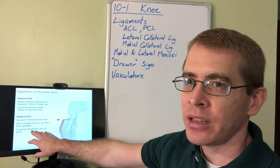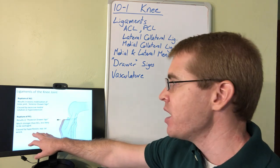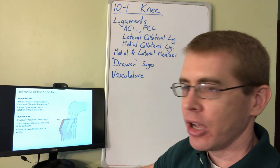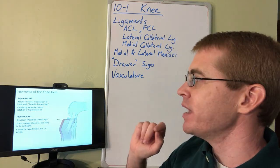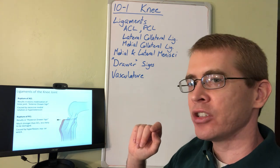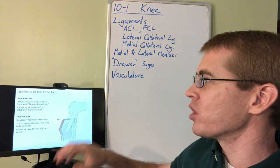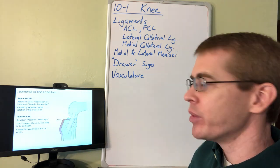PCL damage is caused by hyperflexion of the knee, whereas rupture of the ACL is caused by rotation or hyperextension at the knee.